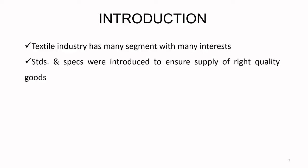Standards and specifications were first introduced to ensure supply of right quality goods. The prime objective is: when I specify what I want and the standard I am looking for, you must give me that specification and achieve that standard to satisfy me. It helps us source right quality goods and helps the manufacturer make right quality goods.